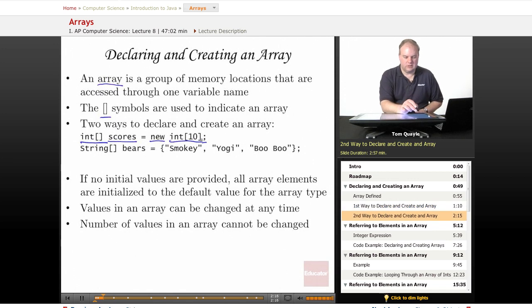The other way to declare and create an array is, again, to begin with the data type of the array we want, followed by the open and close square brackets, the name of the array. And then instead of using new and specifying the number with the data type, we simply provide a list of values right there on the same line. And we have the open and close curly brace to delimit the beginning and ending of the set of values that we want to provide.